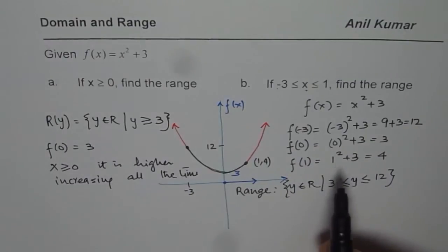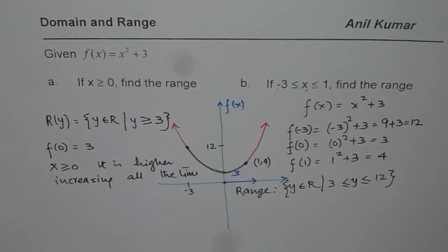So if you restrict the domain, range also gets restricted. So that is kind of important to understand. And you need to see the whole graph to find the range, because the minimum value is not on the extremes. Extremes could have minimum or maximum also. So you have to look for the minimum value or the maximum value as the case is.